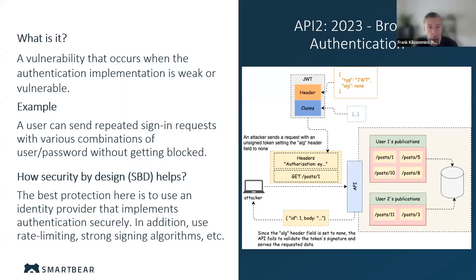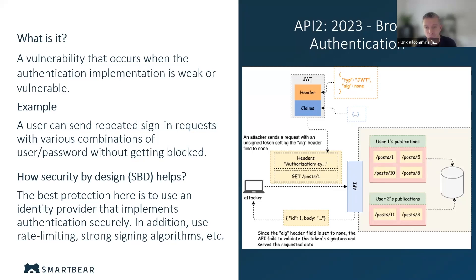The second vulnerability is broken authentication, which generally occurs when there's a weak authentication implementation or no authentication implementation. For example, if we have a sign-in endpoint and we allowed the client to repeatedly send requests using various combinations to basically brute force the endpoint until they can get access to it.